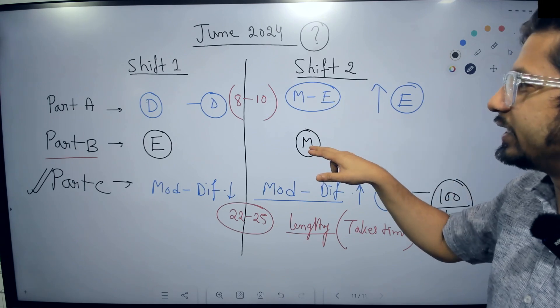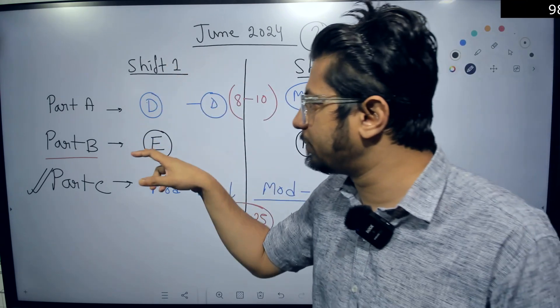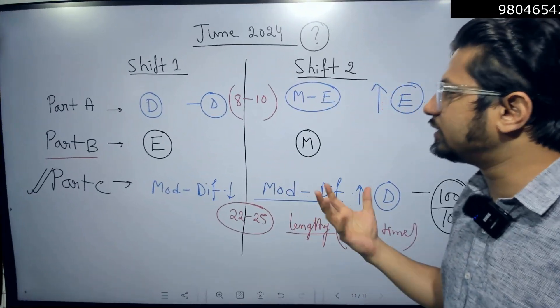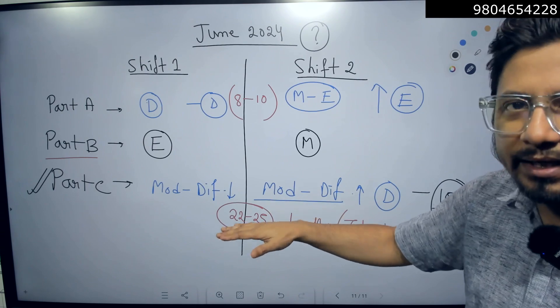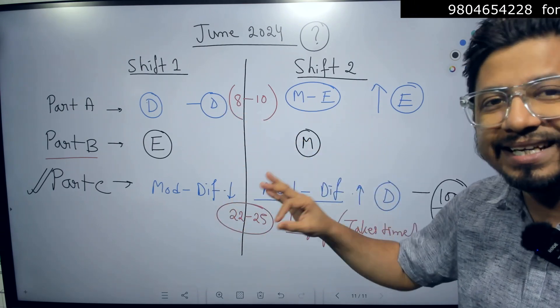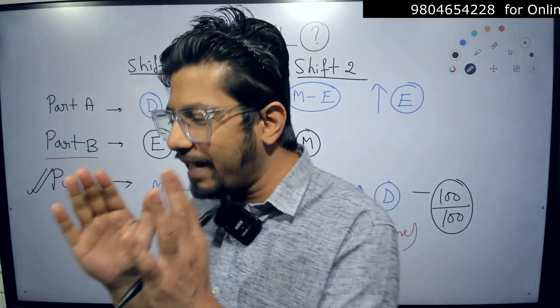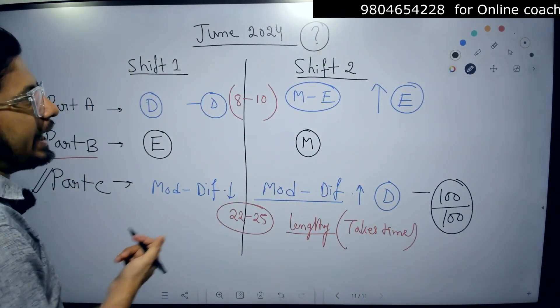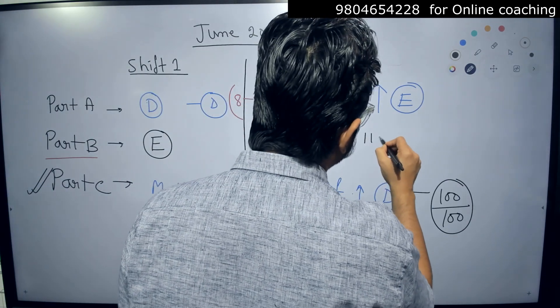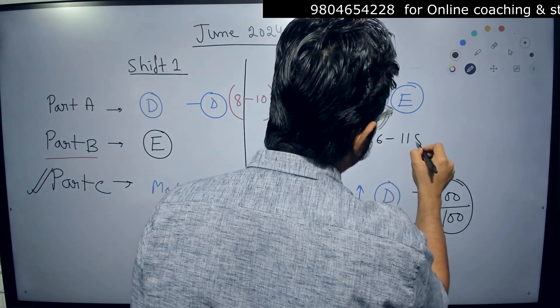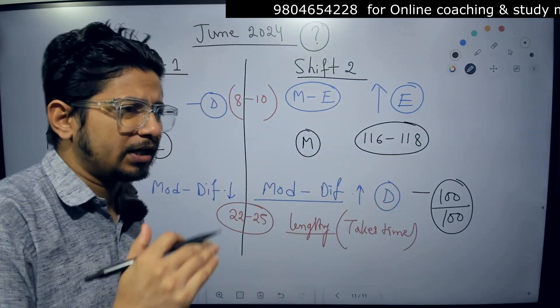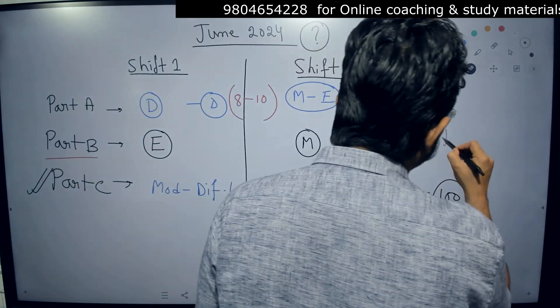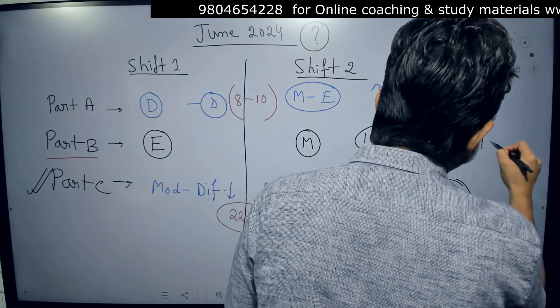Part B was moderate in Shift 2, but Part A was easy. In Shift 1, Part B was easy and Part A was a little difficult. Based on that, tied with the 100 marks from Part C, you can still get a score of 118, 116. And that is what I feel should be the ideal cutoff this time: 116 to 118, somewhere between this, not 120 marks, but near 116 to 118 for JRF in general category.